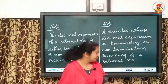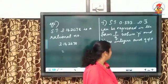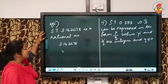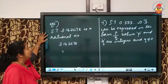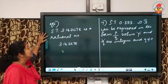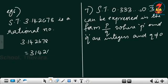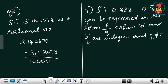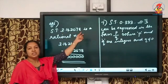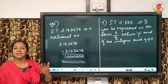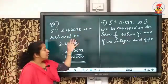Example 6: Show that 3.142678 is a rational number. Since it is a terminating decimal, we can write it as a fraction. There are 6 digits after the decimal point, so we write it as 3142678 over 10 lakh (1,000,000). This is clearly a rational number — it is a terminating decimal.